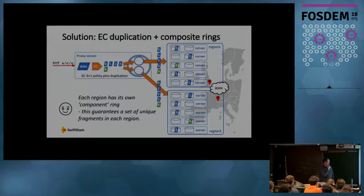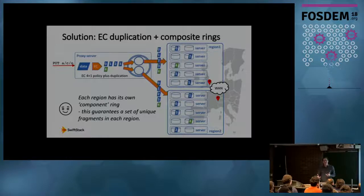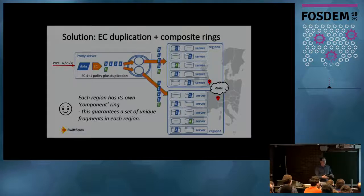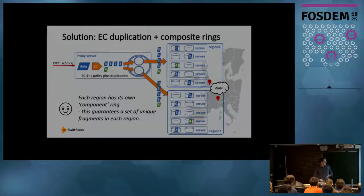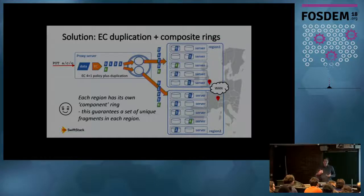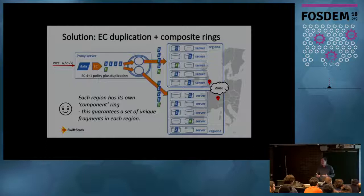So there was one final piece: we added what we call a composite ring. The idea is simple — we take two regular rings and allocate one to each region. Each ring behaves exactly as normal, managing dispersion and load balancing within its own region. The composite ring concept then guarantees that duplicate sets of fragments are always spread between the two regions. Now we're guaranteed to always have a set of unique erasure code fragments in each region, giving us disaster recovery, data locality, and all the benefits of reduced storage requirements from erasure coding.